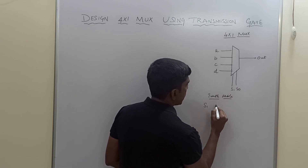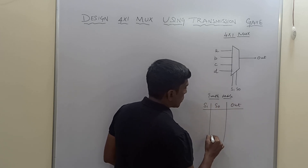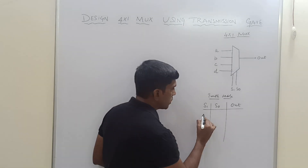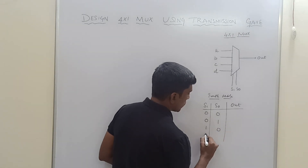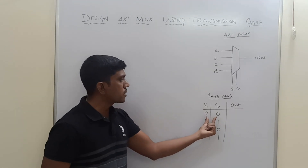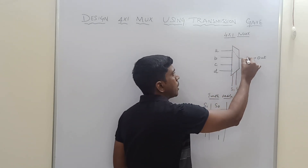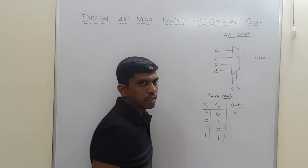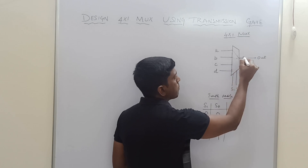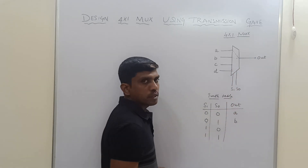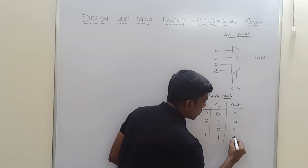The truth table has S1 and S0 as inputs, and output. These 2 variables make 4 combinations: when S1=0, S0=0, the A input is mapped with the output, so output equals A. When S1=0, S0=1, B input is mapped with the output, so output equals B. When S1=1, S0=0, output is C. When S1=1, S0=1, output is D.